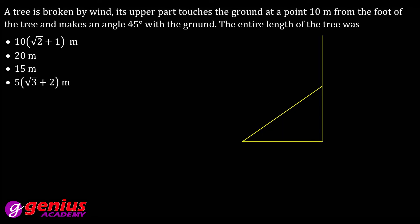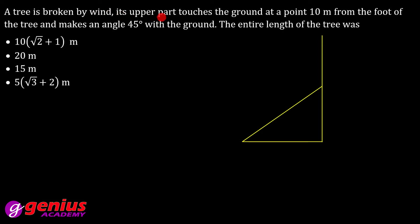Next question: A tree is broken by wind; its upper part touches the ground at a point 10 metres from the foot of the tree and makes an angle of 45° with the ground. Find the entire length of the tree. Let the triangle be ABC — we need to find BD, the total height.